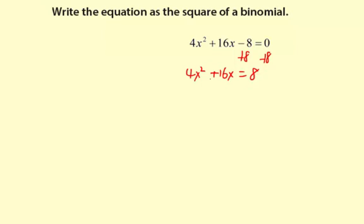Next thing I'm going to do is divide through by 4, giving us x squared plus 4x equals 2.